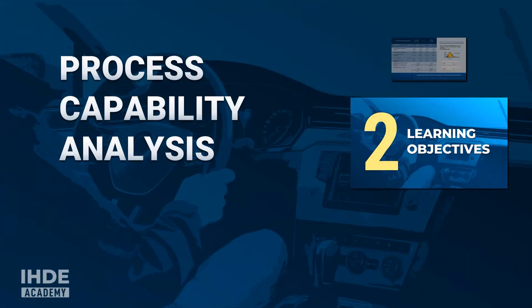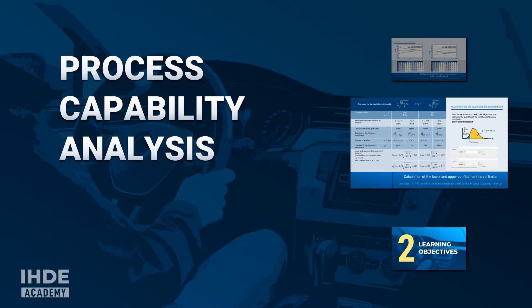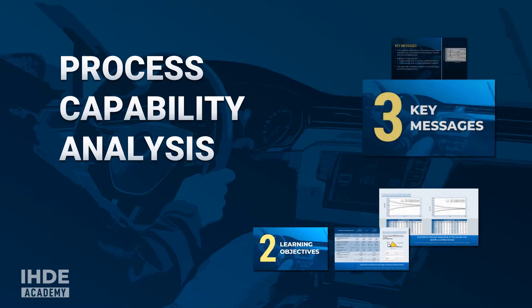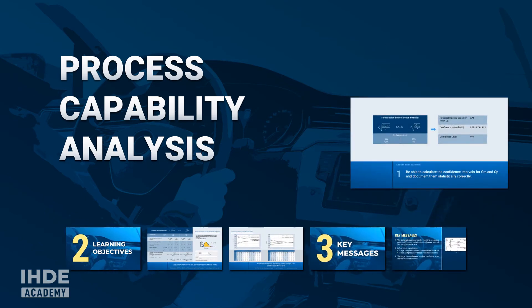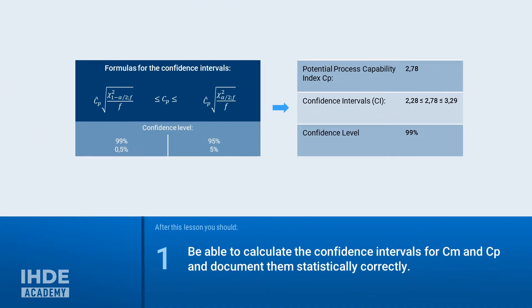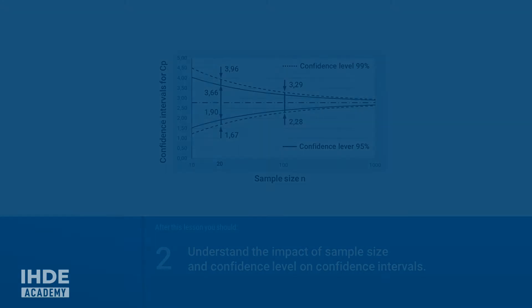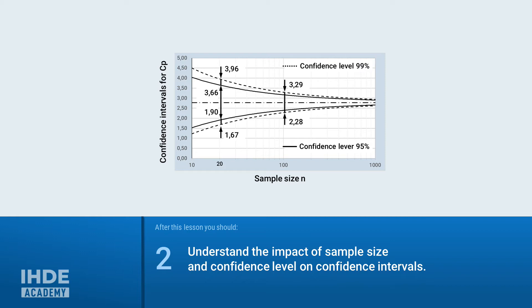In this lesson, we calculate the confidence limits for the index CP for the potential process capability. The confidence level and sample size are also a topic. This lesson has two learning objectives. At the end of this lesson, you should be able to calculate and correctly document the confidence intervals of the machine and process potential. Furthermore, you should know the influence of the sample size and the confidence level on the size of the confidence interval.